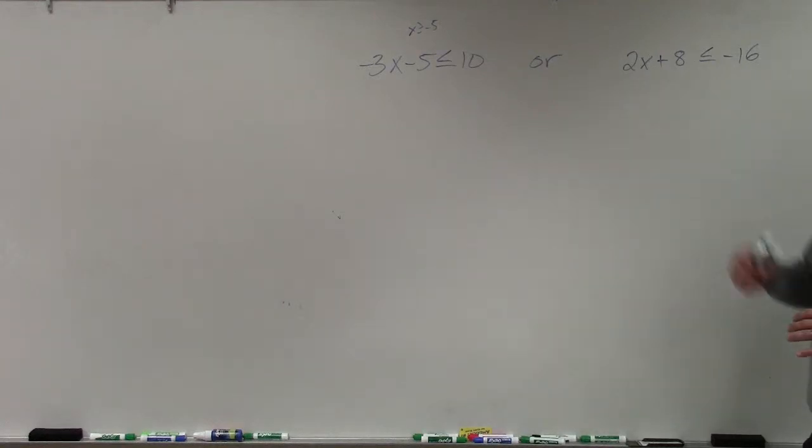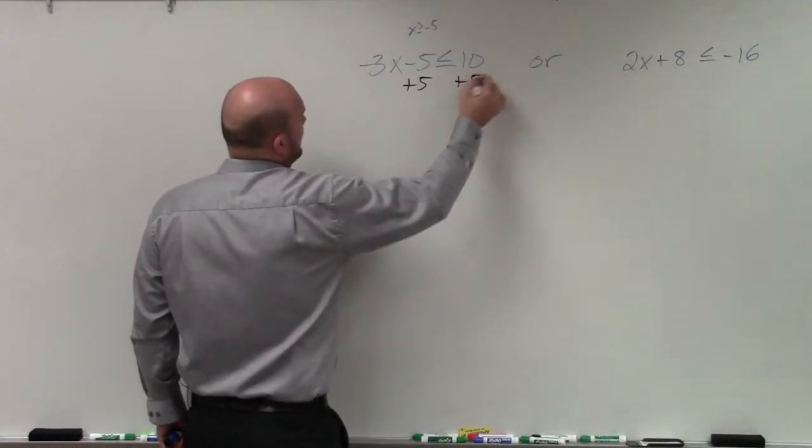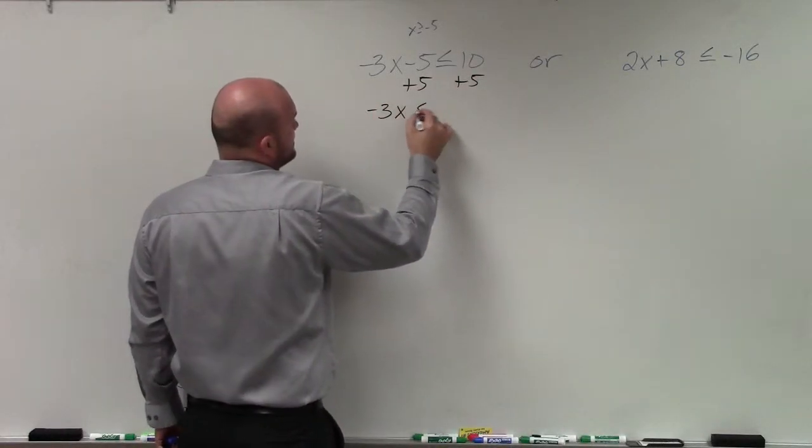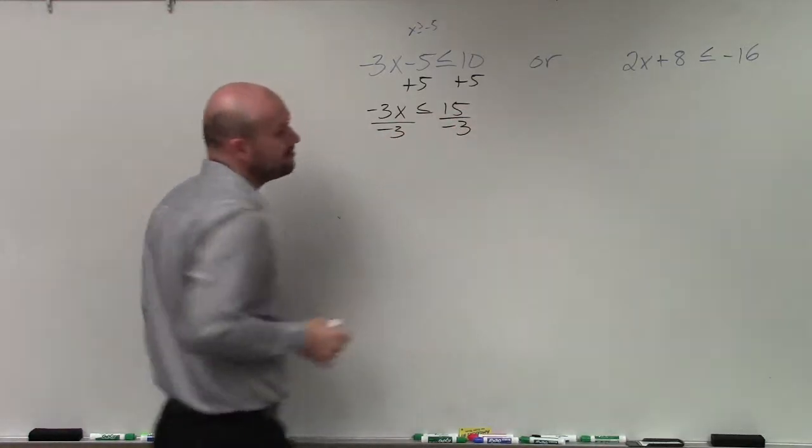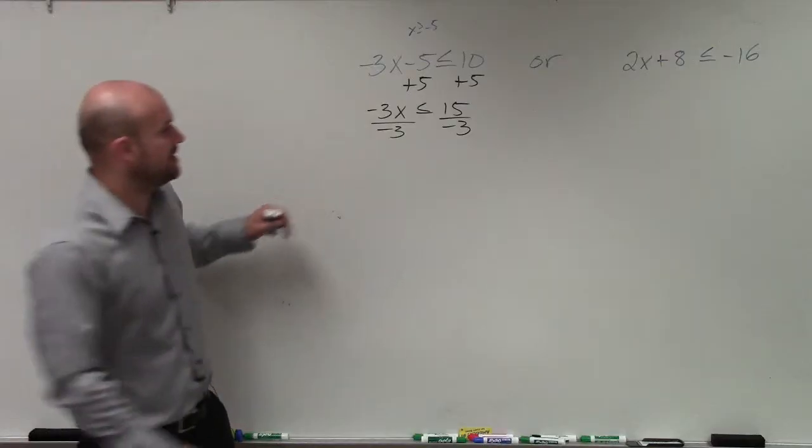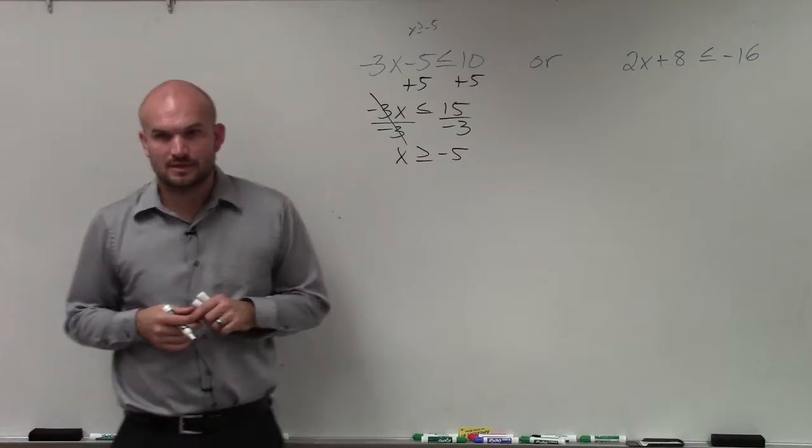So when looking at this problem, all we're simply going to do is solve them separately. So I'll add 5 here. Add 5. Negative 3x is less than or equal to 15. Divide by negative 3. Divide by negative 3. Please remember, whenever you multiply or divide by a negative number, x is greater than or equal to negative 5.